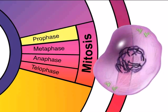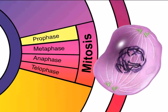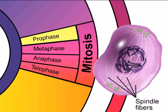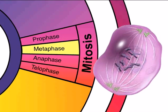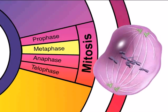In metaphase, the spindle fibers pull the centromeres, aligning them in the middle of the spindle or the equatorial plate of the cell. The two chromatids are clearly visible in this stage.